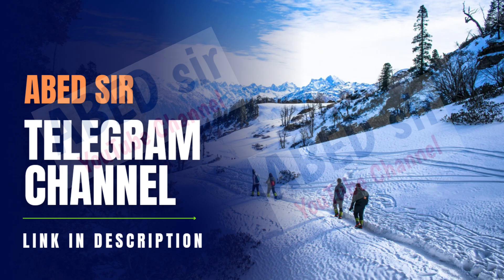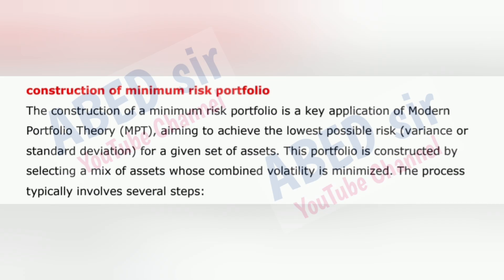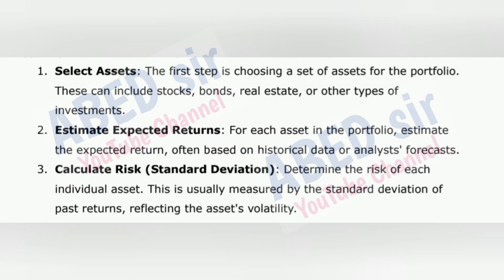The next important long question is the construction of a minimum risk portfolio. The construction of a minimum risk portfolio is a key application of modern portfolio theory, MPT, aiming to achieve the lowest possible risk — variance or standard deviation — for a given set of assets. This portfolio is constructed by selecting a mix of assets whose combined volatility is minimized. The process typically involves several steps. Step 1: Select assets — the first step is choosing a set of assets for the portfolio.